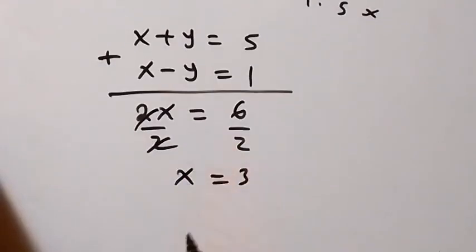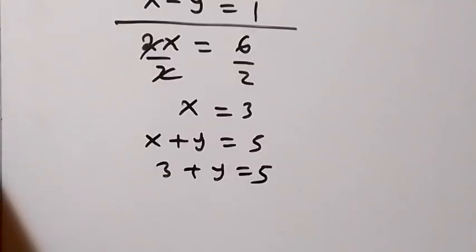Then also we can get y from the first equation here which is x plus y equals 5. And that means 3 plus y equals 5. And then we can say y here equals 5 minus 3. That is, y equals 2.